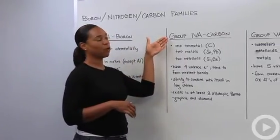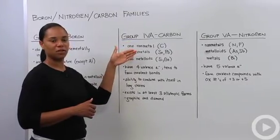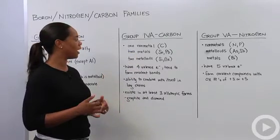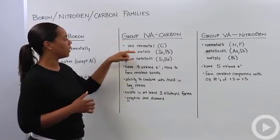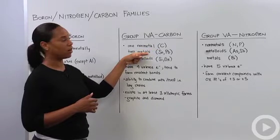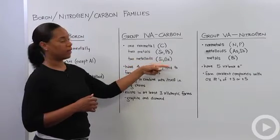Let's now talk about group 4A which is the carbon family, quite possibly one of the most important elements represented on the periodic table as carbon is the stuff of life. In the carbon family you've got one nonmetal which is carbon, two metals tin and lead, and two metalloids silicon and germanium.